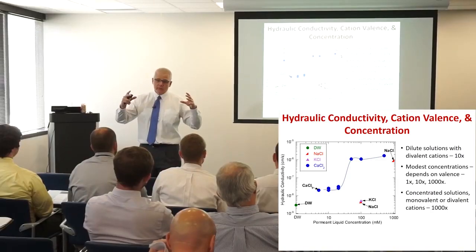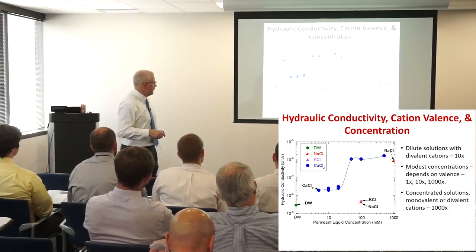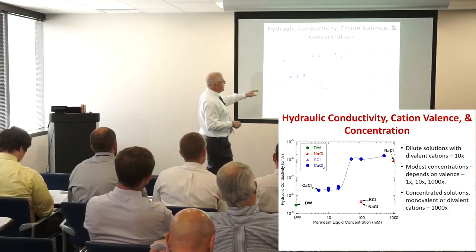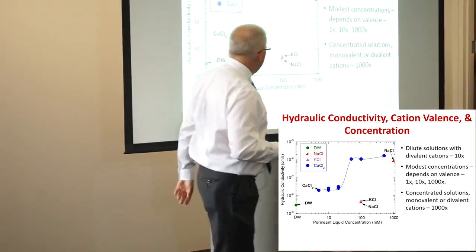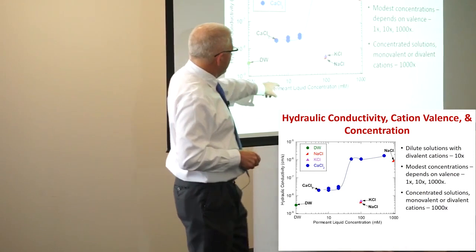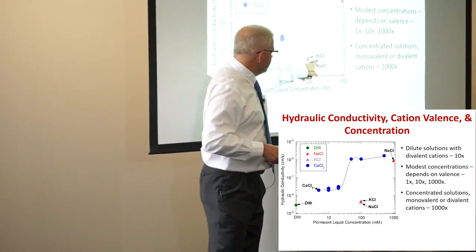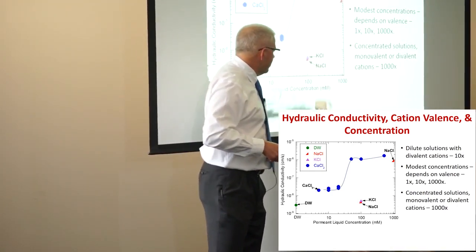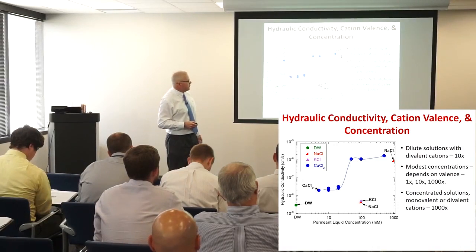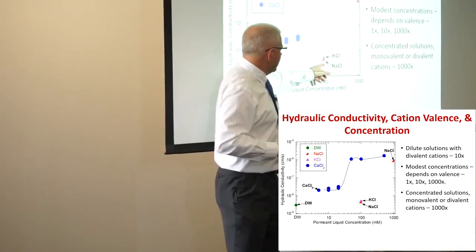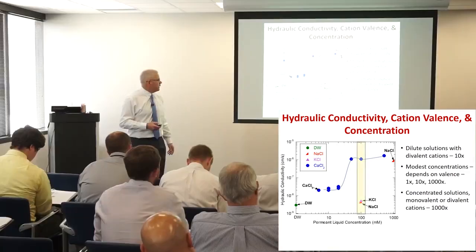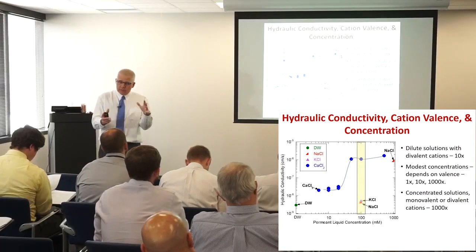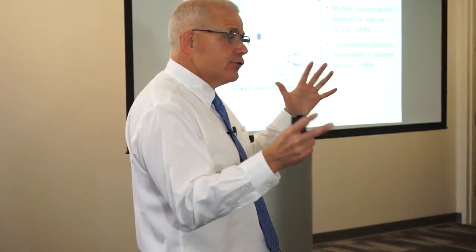As we increase the concentration of calcium, the hydraulic conductivity really goes up. When we do the same experiment with monovalent cations like sodium, we get something quite different — these induce a lot of swell, a lot of osmotic swell, and we get very low hydraulic conductivity. So even at the same concentration, the chemistry fundamentally changes the outcome.